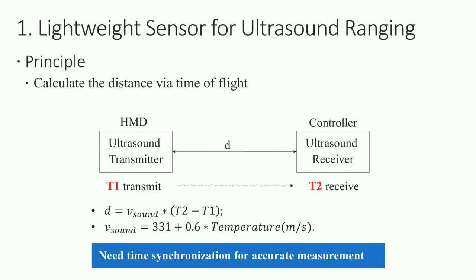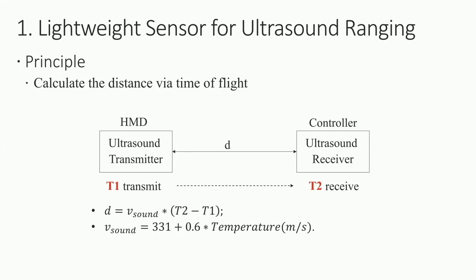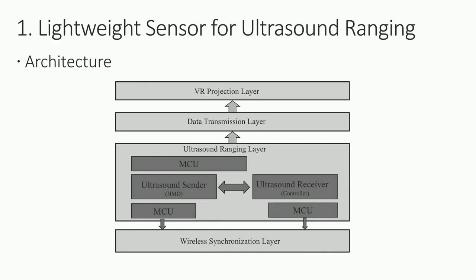The first module is lightweight ultrasound ranging. The principle is to utilize the time of flight of ultrasound to calculate distance. With the ultrasound located on both the headset and controller, at time T1 we transmit the ultrasound signal and at T2 we receive it. The distance is calculated based on the difference between T1 and T2. One important note is that time synchronization between the two devices is critical. The temperature term, approximately 70 degrees, affects the velocity of sound.